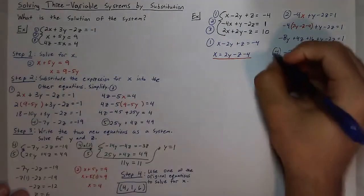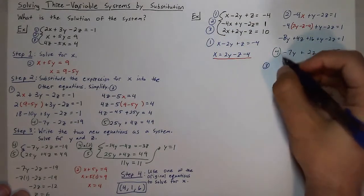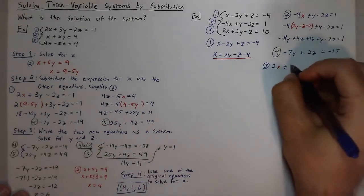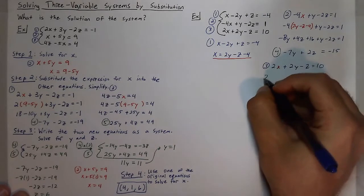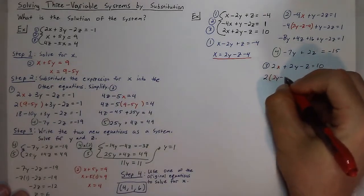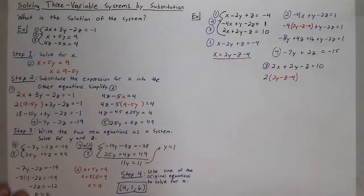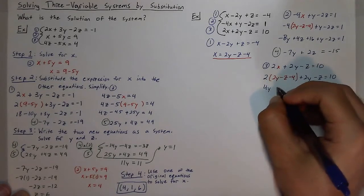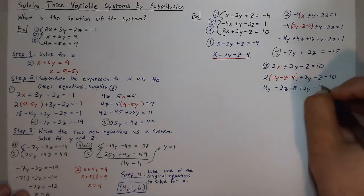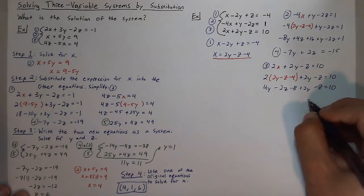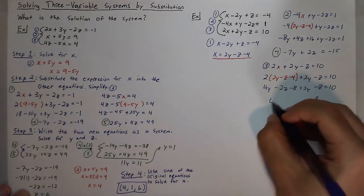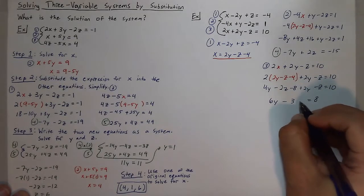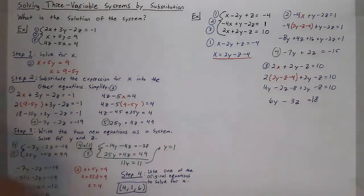This will be equation 4. I can do the same thing with equation 3 by substituting in what x is now equal to. Equation 3 is 2x plus 2y minus z is equal to 10, so it becomes 2 times (2y minus z minus 4) plus 2y minus z equals 10. Distributing the 2, I get 4y minus 2z minus 8 plus 2y minus z equals 10. Adding 8, with 4y plus 2y giving 6y and negative 2z minus z giving negative 3z, that equals 18. This will be equation 5.